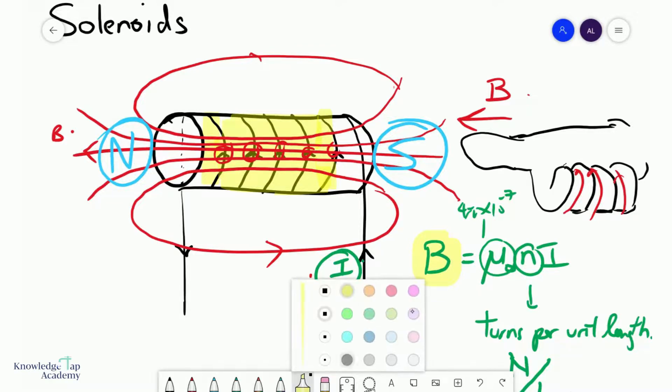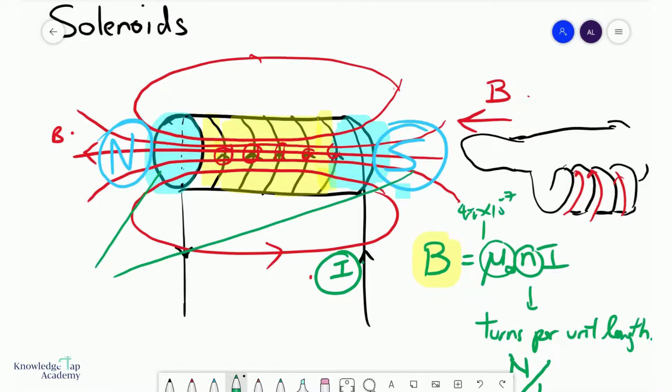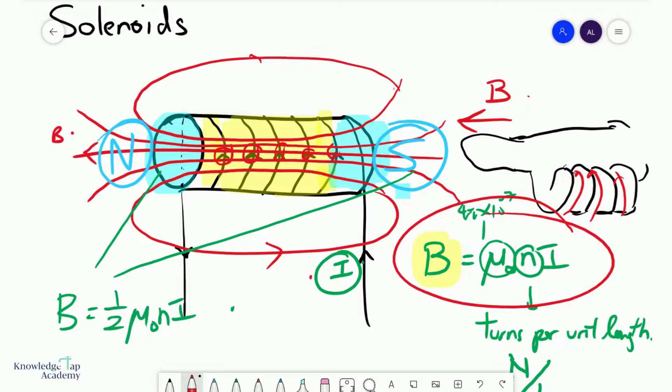But once you reach near the ends of the solenoid, so maybe we're talking about over here and over here, approximately your flux density will half. But you don't actually have to know this for the A levels. We would typically be always using this formula over here.